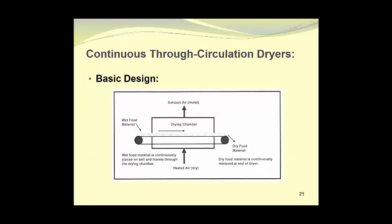Here is the basic design of a through-circulation dryer. Wet food material is placed on the beginning of a conveyor belt, which then puts it through a drying chamber. Heated air, which has a low water content, then goes up through the drying bed and leaves as moist exhaust air. The dry food material is then discharged from the end of the conveyor belt as additional wet feed material is placed on the feed end of the belt.